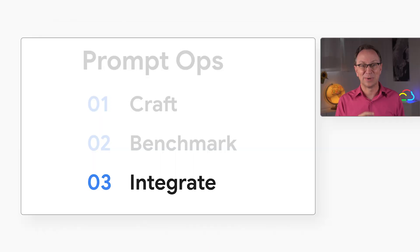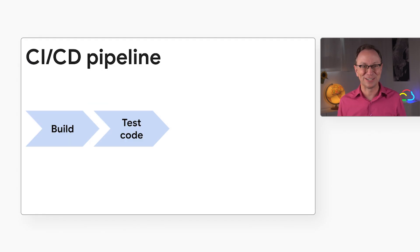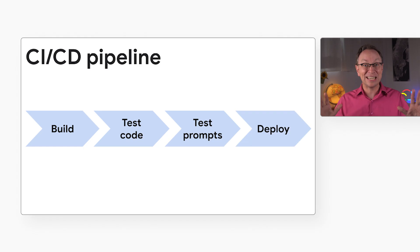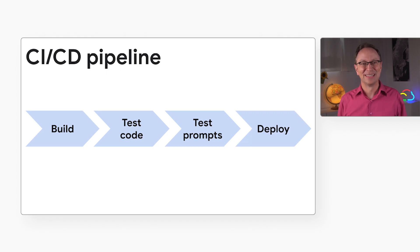Finding the best prompt feels great, but how do we make sure it stays the best? For example, things could go wrong if a teammate makes a seemingly harmless tweak to the prompt, or the underlying model is updated. That's why there is an integrate step. It's a good idea to run automated tests against our application code as part of our CI/CD pipeline — let's do the same for prompts.